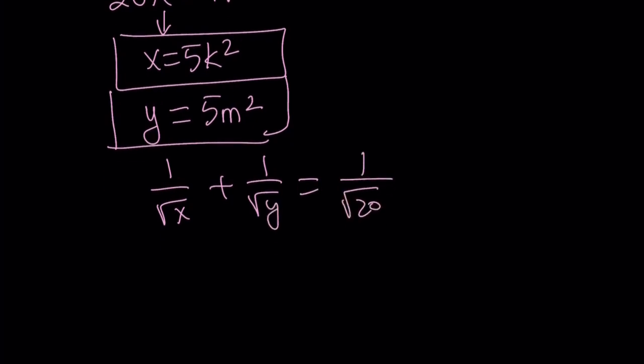If you replace x with 5k squared, you can choose k and m to be positive. When you square root it, if k and m are positive, you get 1 over k root 5 plus 1 over m root 5 equals 1 over square root of 20. k and m have to be positive because if they're not, you get a negative expression on the left-hand side.